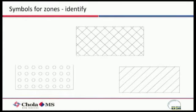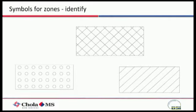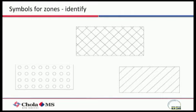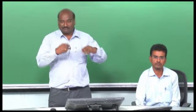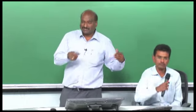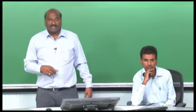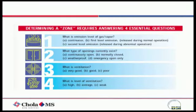In a hazardous area classification drawing, it looks like checked boxes, dots, and single and double hash marks. Based on this, you get to know which is zone 0, zone 1, or zone 2. Zone 0 normally will not be hatched in the drawing — only zone 1 and zone 2 would be hatched. There are other factors also which determine whether to classify areas as zone 0, zone 1, or zone 2 — one of which is the type of ventilation.